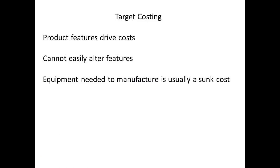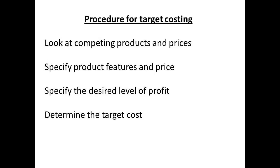An alternative way of looking at pricing is called target costing. This method recognises that product features are important in driving the costs. Once a product is designed, it may not be easy to alter many features. If a particular machine has to be made to produce the product, then this equipment, once made or produced, becomes a sunk cost. The steps taken to achieve target costing are fairly straightforward. Competing products are looked at and their price is noted. There would be no point in introducing a product with similar features unless you can match or cut prices of competing products. From this, the desired price and features are specified. The desired level of profit is determined. Finally, the target price is determined.